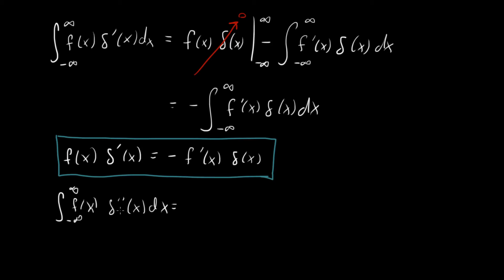We're going to do the same trick as before, we're going to use integration by parts. And so what's going to happen? We do it the first time, we're going to get f of x delta prime of x, evaluated from minus infinity to infinity, minus integral, minus infinity to infinity, f prime of x delta prime of x dx.